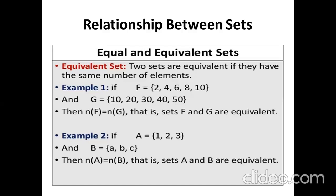The next relationship is equivalent sets. Two sets are equivalent if they have the same number of elements. Students often get confused with equal and equivalent. Equal sets have the same elements, but equivalent sets only need to have the same number of elements. For example, if F = {2, 4, 6, 8, 10} and G = {10, 20, 30, 40, 50}, we can see that the number of elements in set F equals the number of elements in set G.